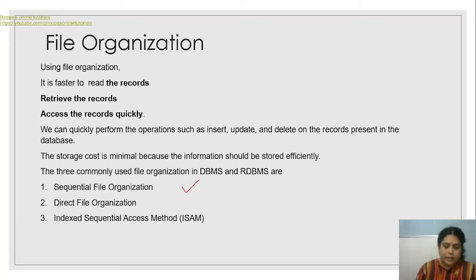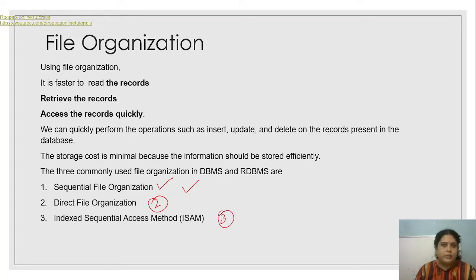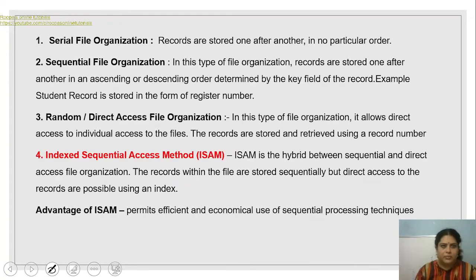File organization is of three types: sequential file organization, direct file organization, and index sequential access method or ISAM. The word sequential means one after another. In this file organization, records are stored one after another in ascending or descending order, determined by the key field of the record.